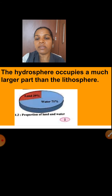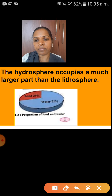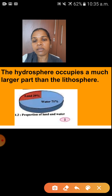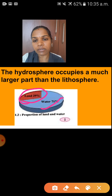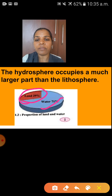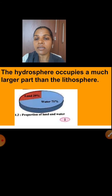The hydrosphere occupies a much larger part than the lithosphere. See here — this blue part is the water part and this is land. Land is 29% and the remaining part is occupied by water. So the hydrosphere occupies 71% while the lithosphere occupies only 29%.